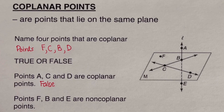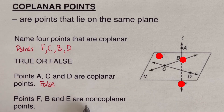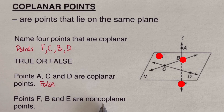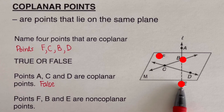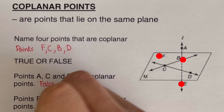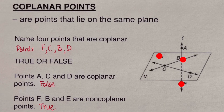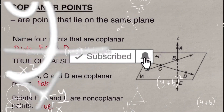Points f, b, and e are non-coplanar. Non-coplanar means they are not sitting on the same plane. Points f and b are on the plane, but e is off the plane, so they are non-coplanar. This statement is true. If you find this video helpful, hit like and subscribe for more math videos!